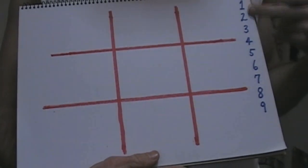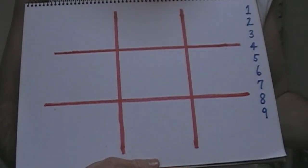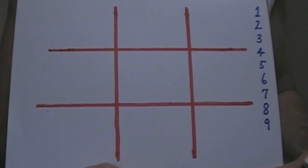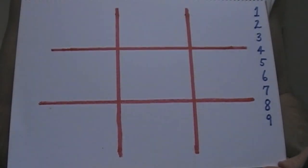All right, so once again you'll use each number once, put it into the puzzle, and they'll all add up to 15. There's a few different solutions for this.